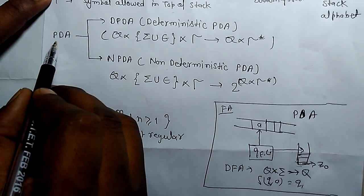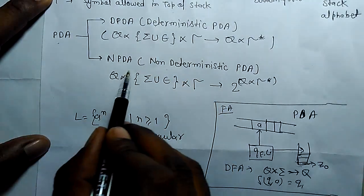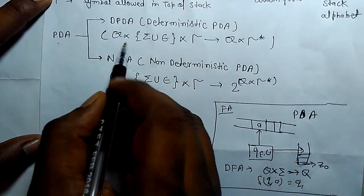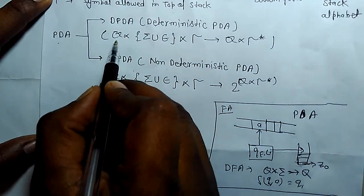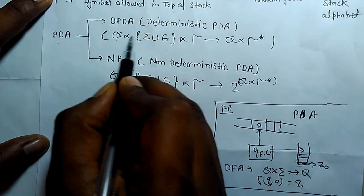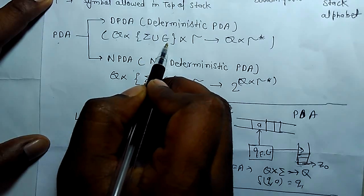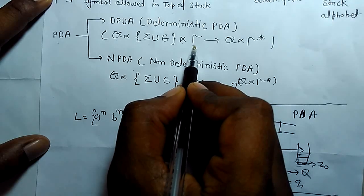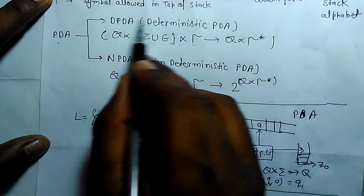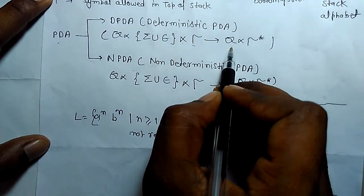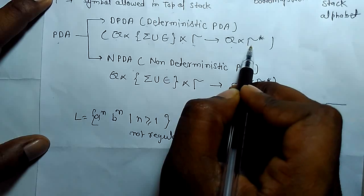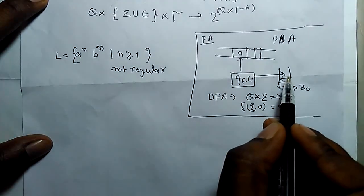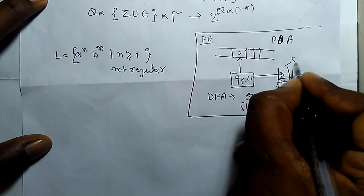There are two types of pushdown automata: deterministic pushdown automata and non-deterministic pushdown automata. For deterministic pushdown automata, the transition combines the state with the input symbol or epsilon and the symbol on top of the stack. The most important component in pushdown automata is the stack — that is the memory.